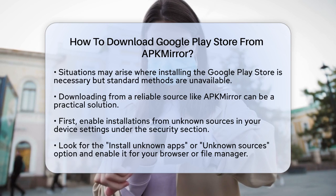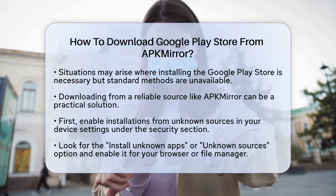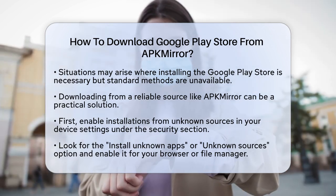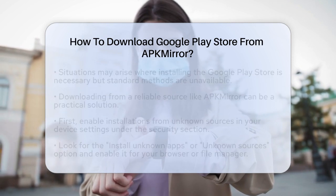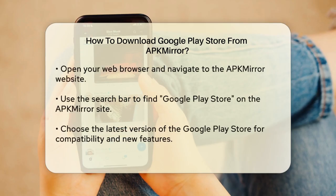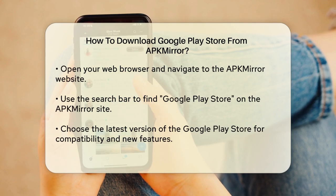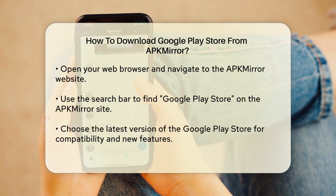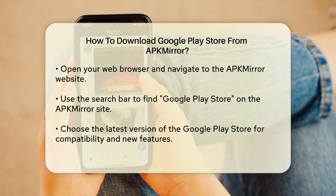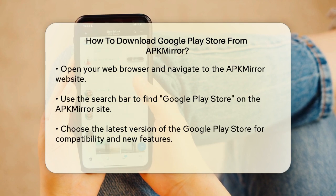First, ensure that your device allows installations from unknown sources. To do this, go to the Settings menu, then navigate to the Security section. Look for the option that says Install Unknown Apps or Unknown Sources and enable it for the browser or file manager you will use to download the APK file.